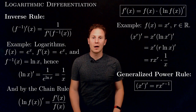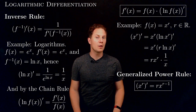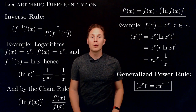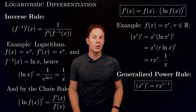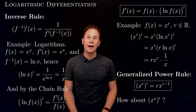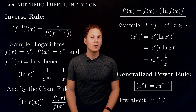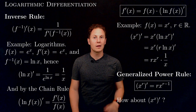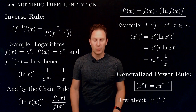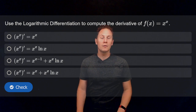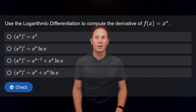So we obtain that x to the r differentiated gives us r times x to the r minus 1. This works for any real exponent. Now you may think — how about x to the x, its derivative? Feel free to pause the video and think about it, because this is exactly what we will compute next. Use logarithmic differentiation to compute the derivative of f of x equals x to the x.